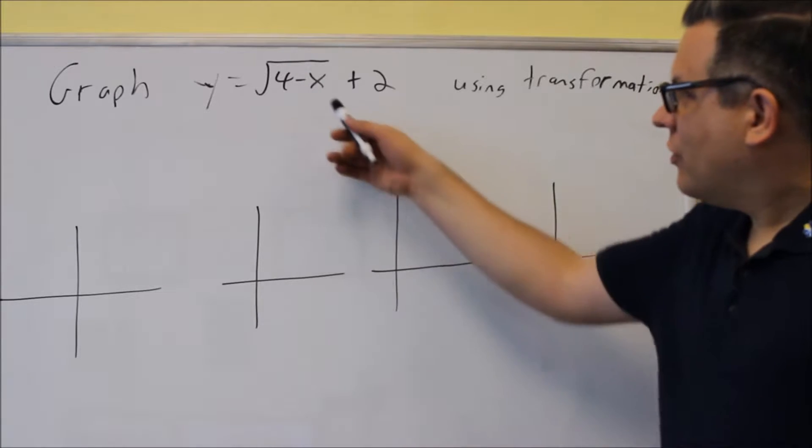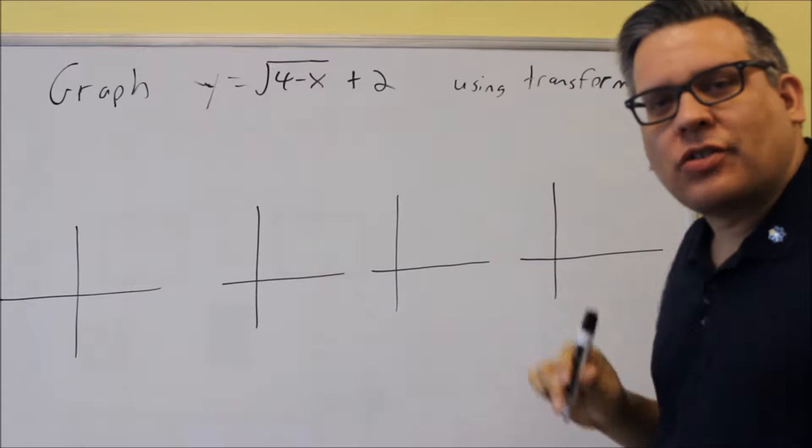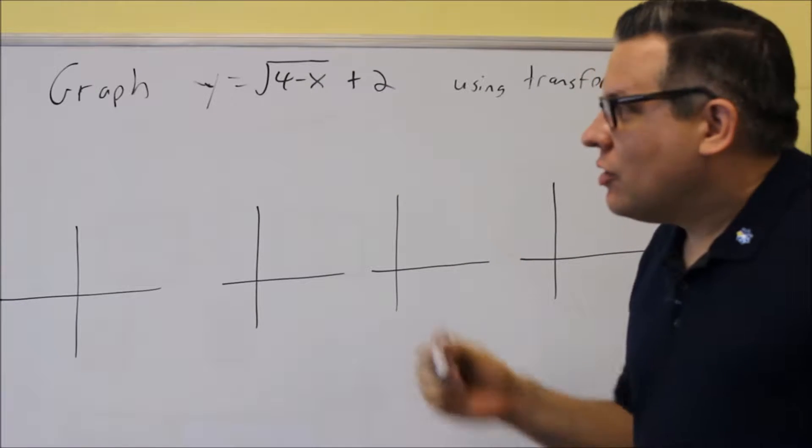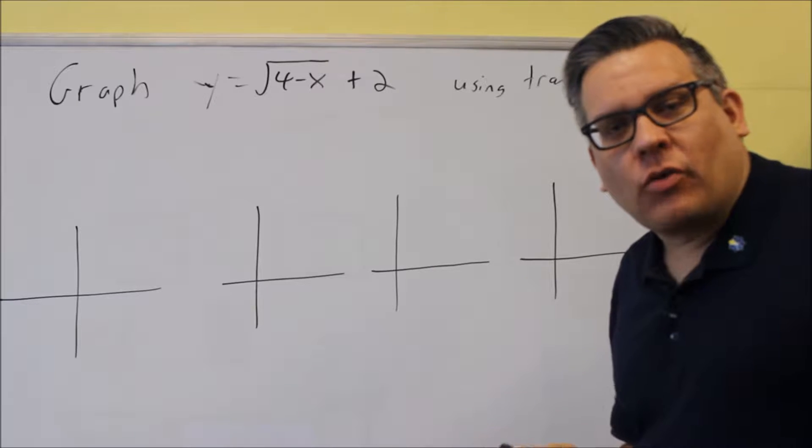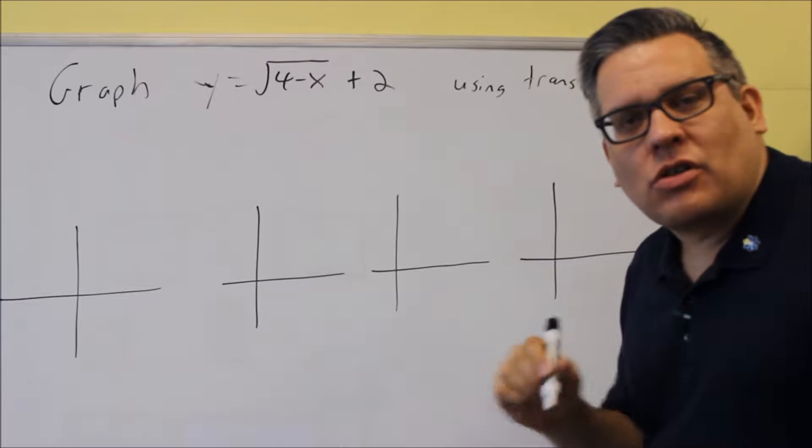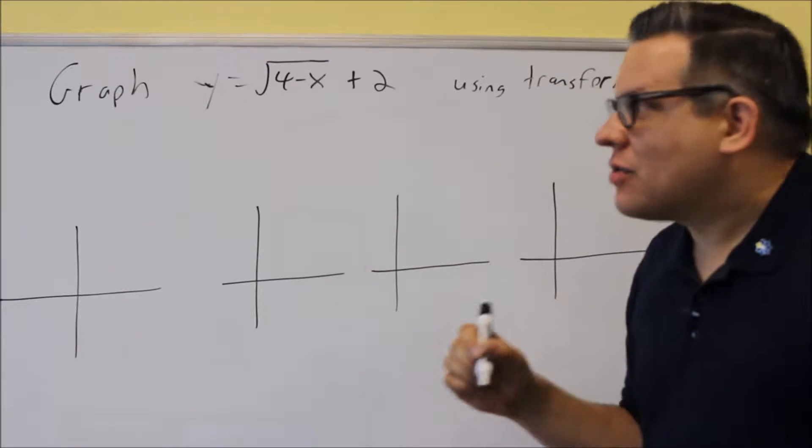Okay, so this time we have different ordering inside the square root. Now, one thing to remember about transformations is you have to make sure it's in the proper form that we had in the beginning of this section. So, the way the transformations work is you've got to have a positive x, and it's x plus or minus something.